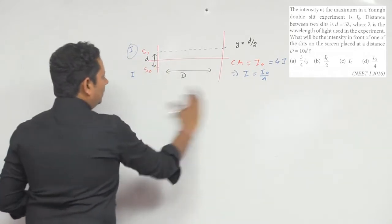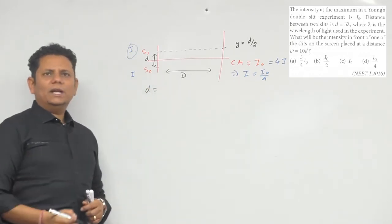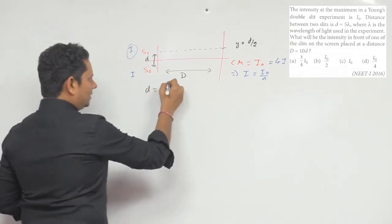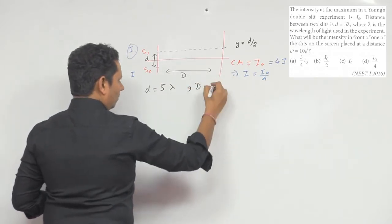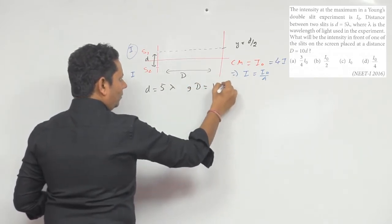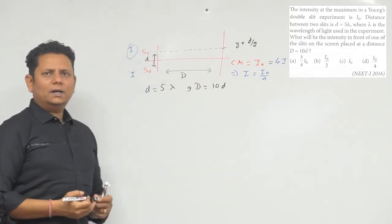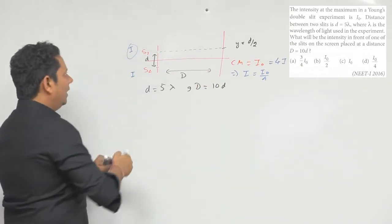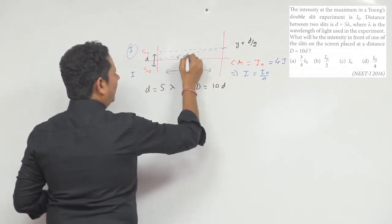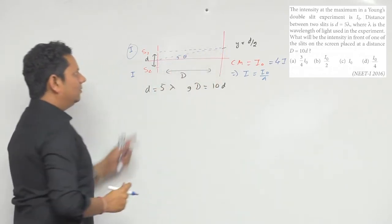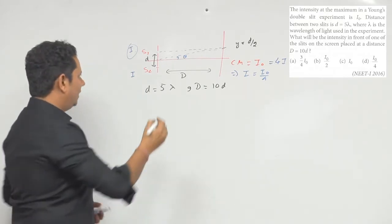यहाँ पर जो data दे रखा है उसको लिख लें: छोटा d जो है वो lambda की term में दिया हुआ है, यह equal to 5 lambda है, और capital D की value 10d दी हुई है। इस जगह पर intensity क्या होगी — मान लीजिए यह आपका angle theta है।